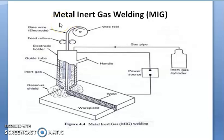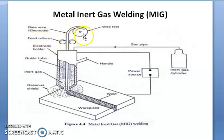In the last video, we discussed tungsten inert gas welding, where only tungsten material is used for the welding process. Here in MIG we use different types of electrode materials. This electrode is a consumable electrode stored in the wire reel, and a feed roller supports moving the electrode continuously during operation. This is called a bare electrode, meaning it is an uncoated electrode — there is no flux coating surrounding this electrode.